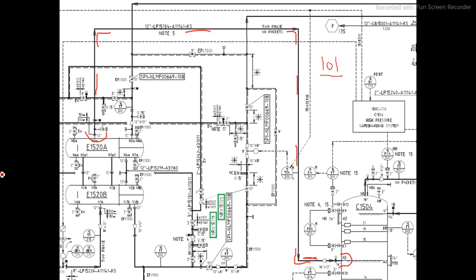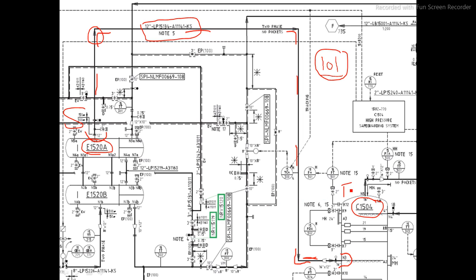Here is an example with P&ID number 101. If this is your line number, you search in the line list and find P&ID 101 for that line. Looking at the flow arrow, the fluid is coming out of this equipment — so this equipment is my starting point, or 'from.' The line goes to another equipment, which is my end point. So that first equipment is 'from' and the second is 'to.'